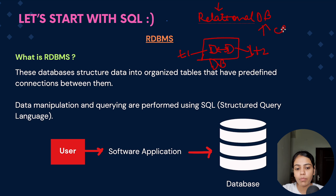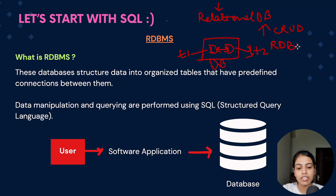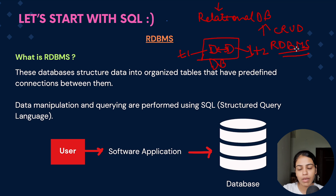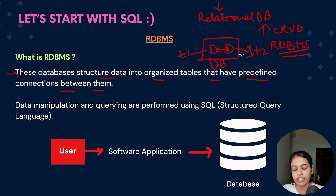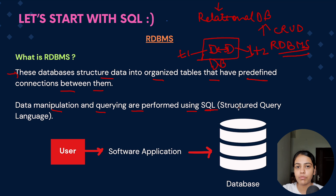Now to perform CRUD operations or to manage data of a relational database, we need a software. That software is called a relational database management system. These databases structure data into organized tables that have some predefined connections or relationships between them. Data manipulation and querying are performed using SQL, that is structured query language, to perform any kind of data manipulation or querying on our data.